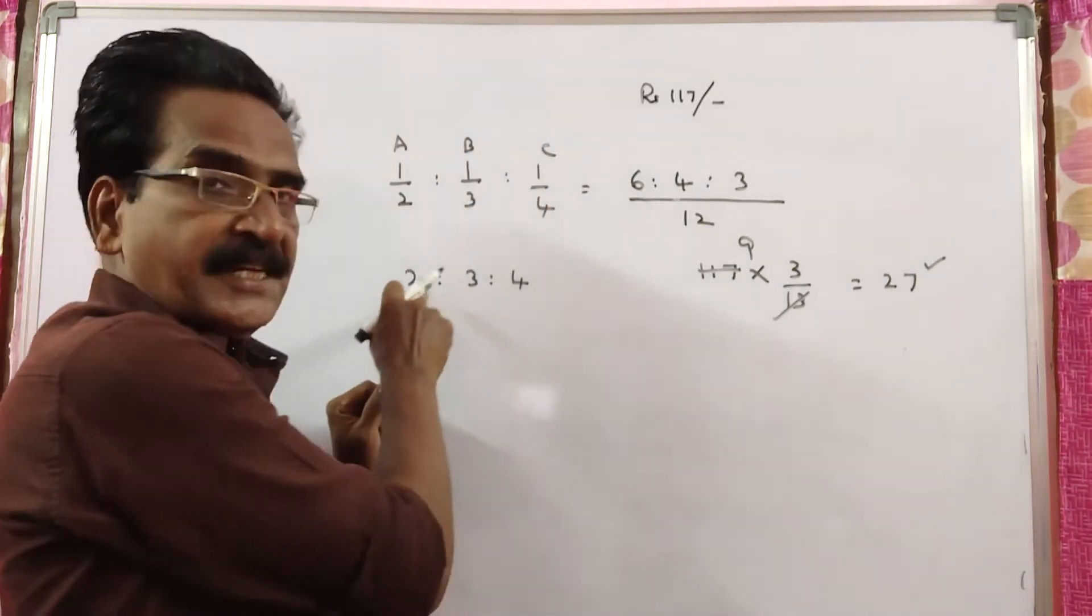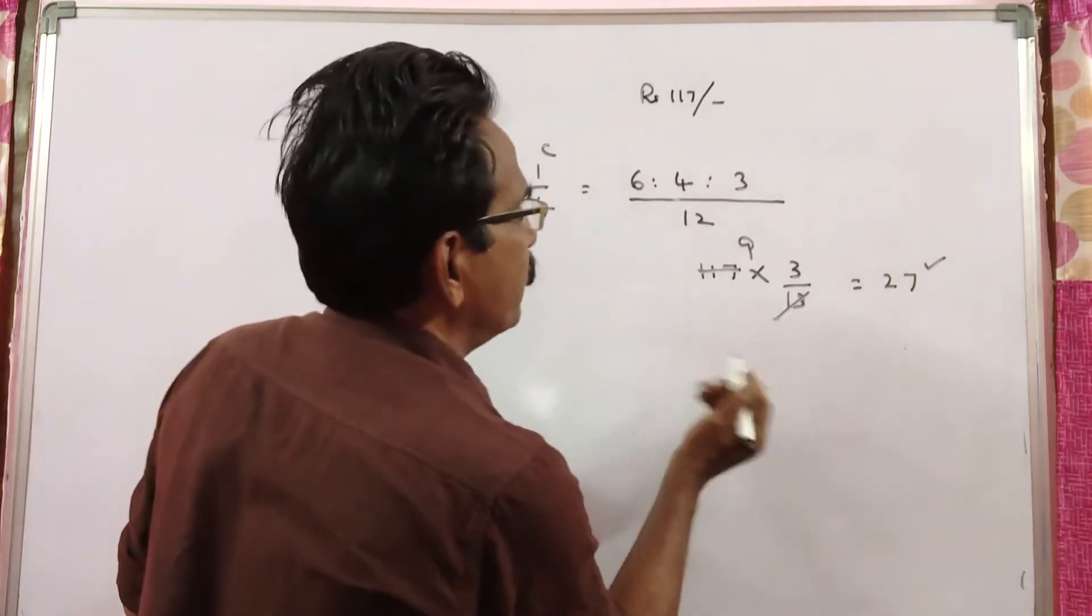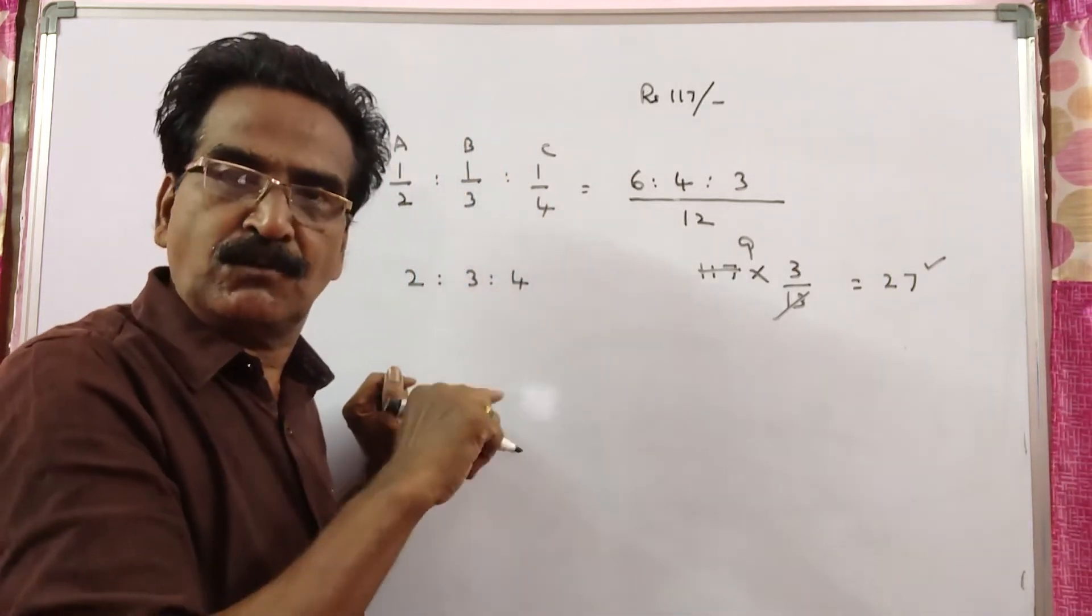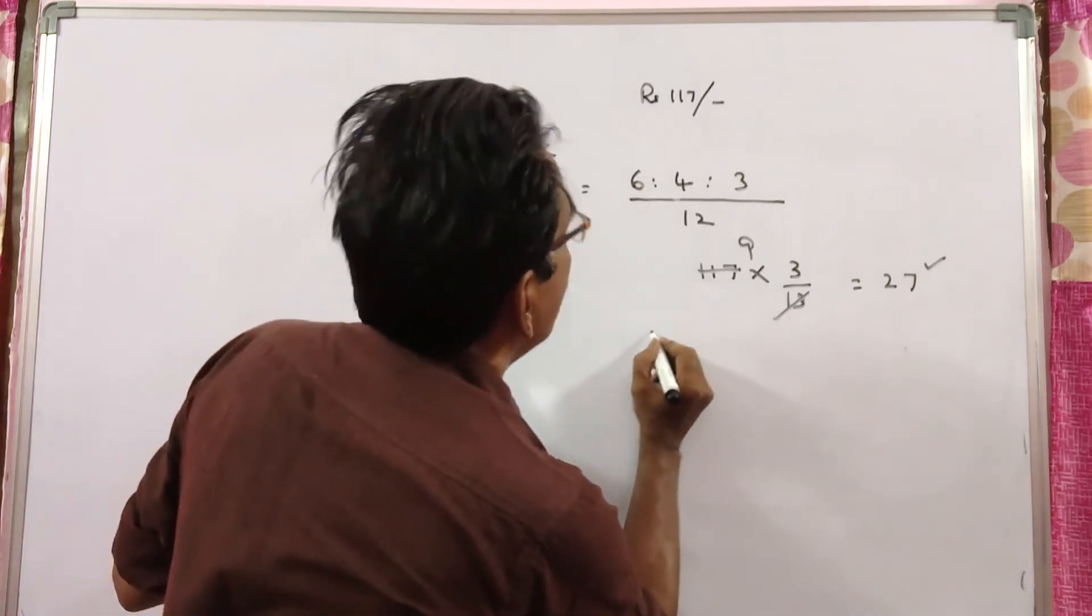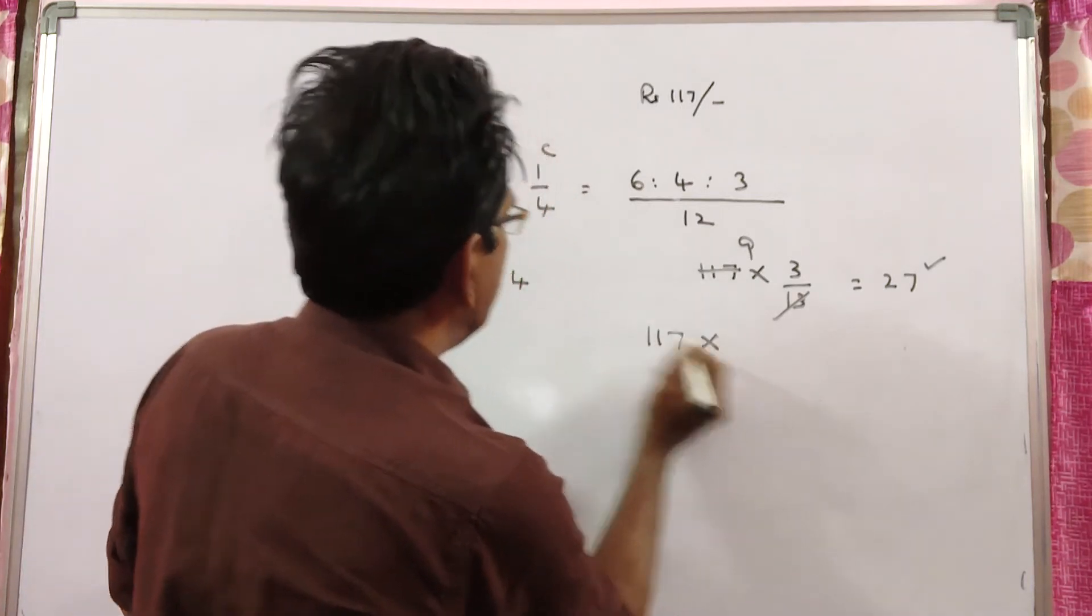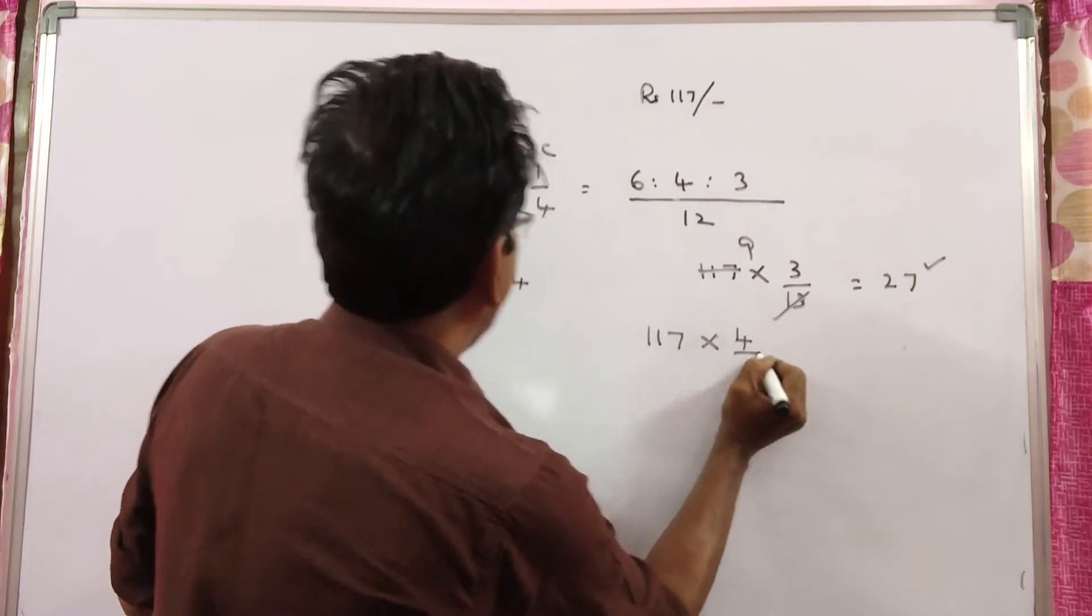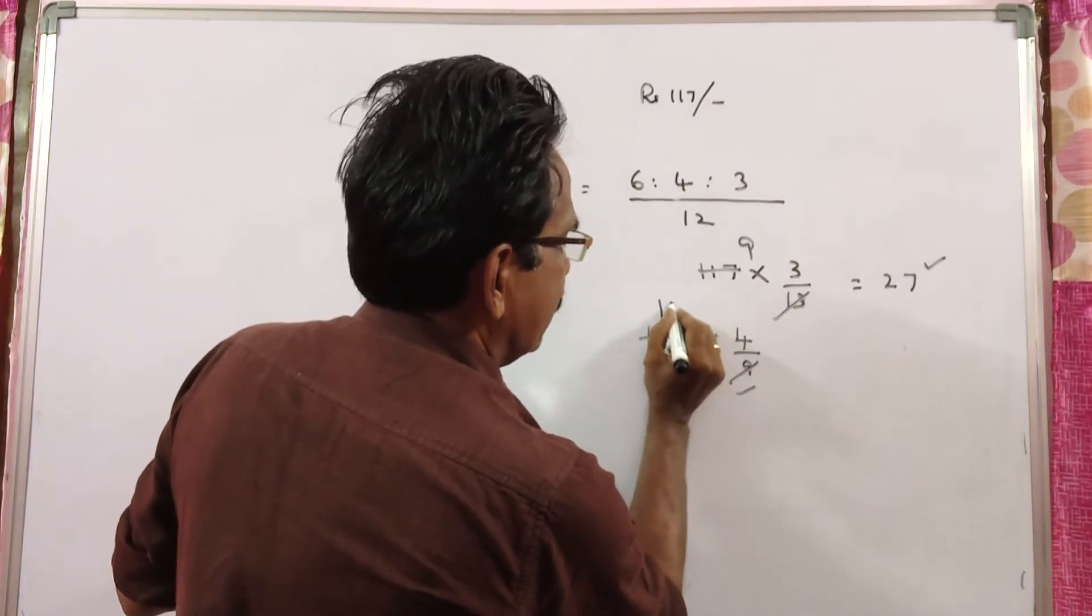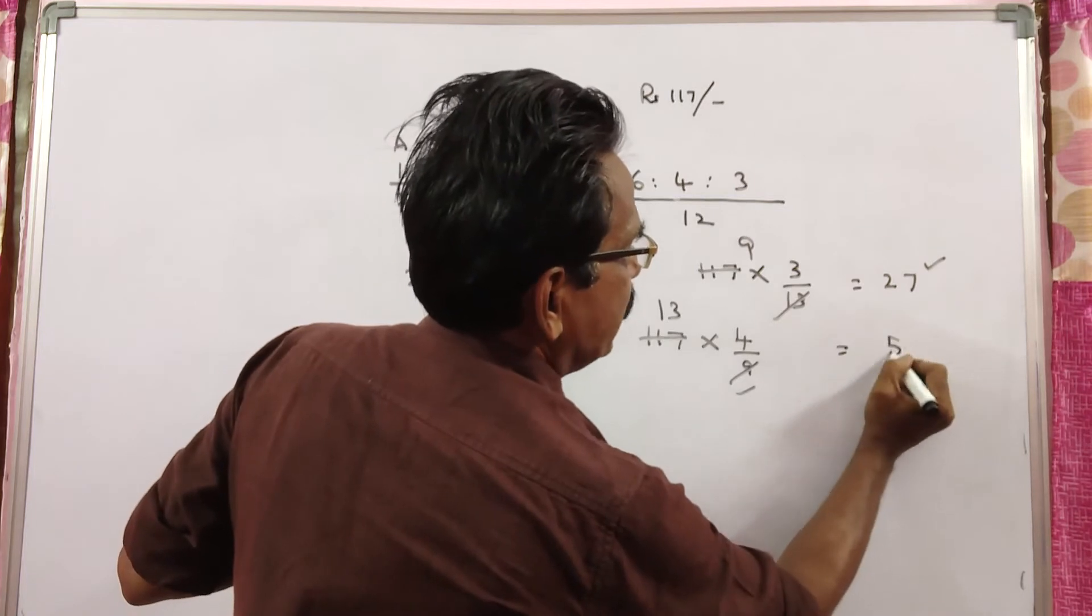But it was divided in the ratio 2:3:4. Now let us see how much C will get if it is divided in the ratio 2:3:4. So 117 into 4/9 equals 13 times 4 equals 52.